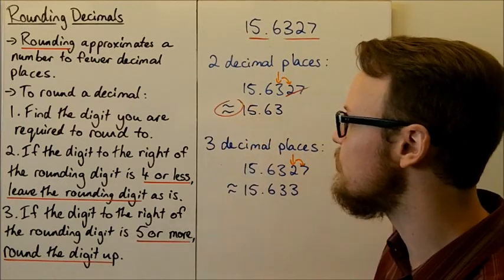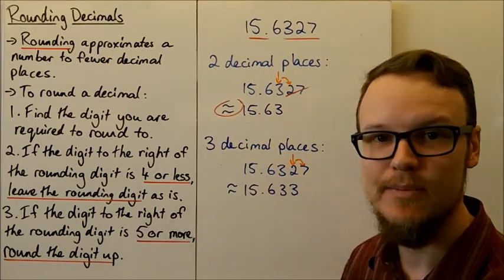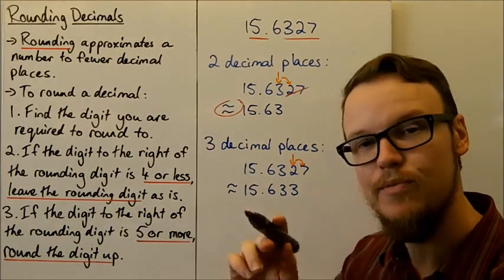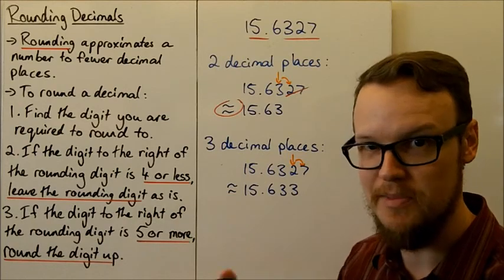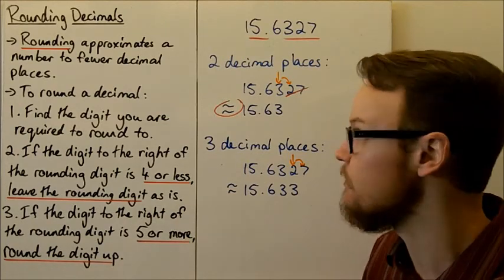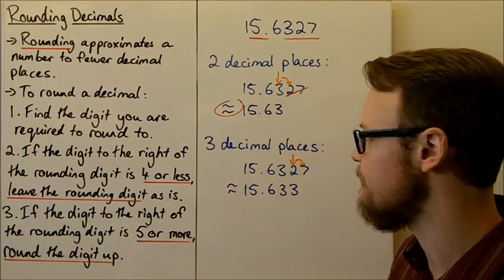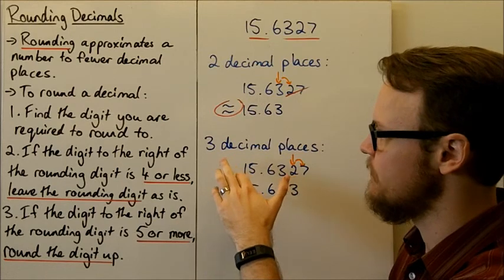Note that I've used this symbol — I haven't written equals, but I've written 'is approximately equal to,' because it is approximately equal to the number above.